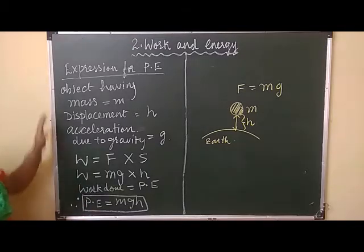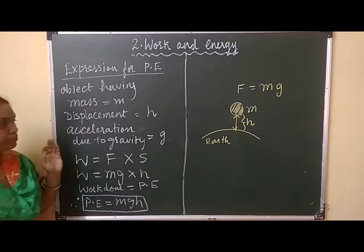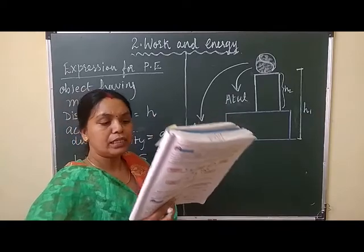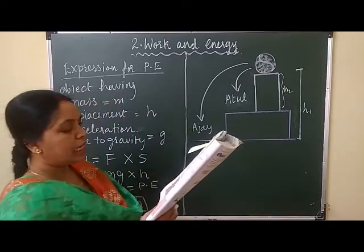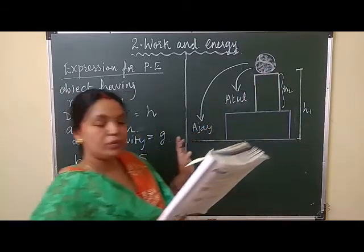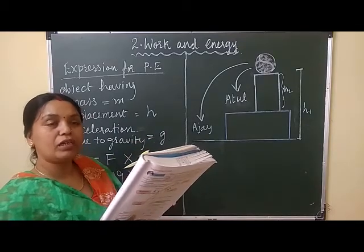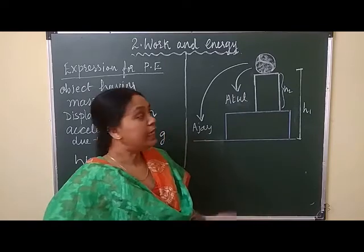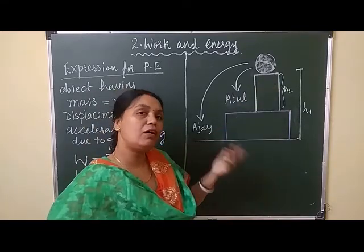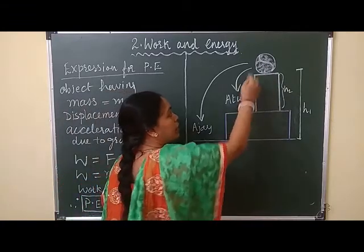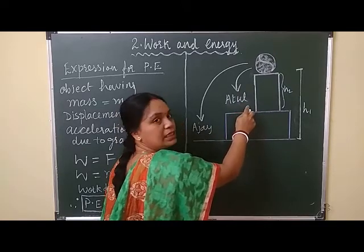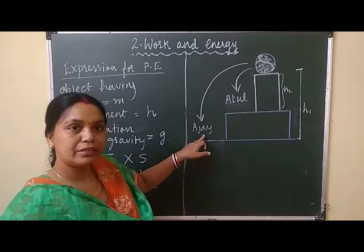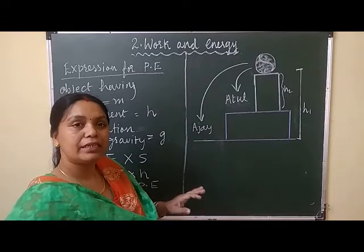This is asked for two marks — you have to copy down the expression for potential energy. There is a small activity in your textbook: Ajay and Atul have been asked to determine the potential energy of a ball of mass kept on a table as shown in the figure. Will they get different answers? Remember, potential energy is a relative term. It depends on the height of the object. Atul will experience less potential energy than Ajay because the height is greater in Ajay's case. So potential energy is a relative term.